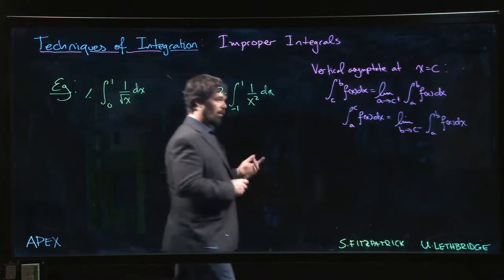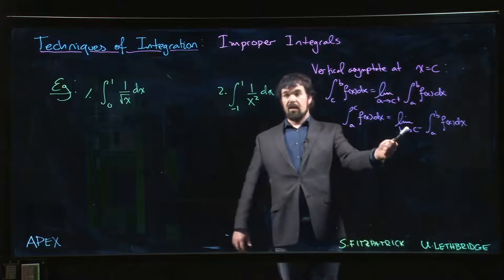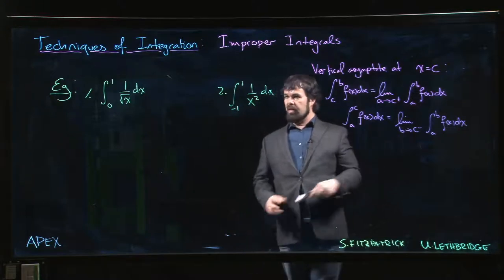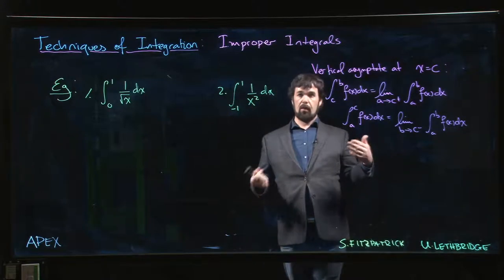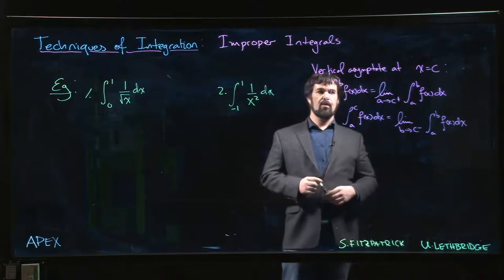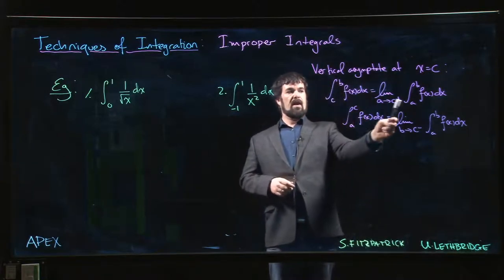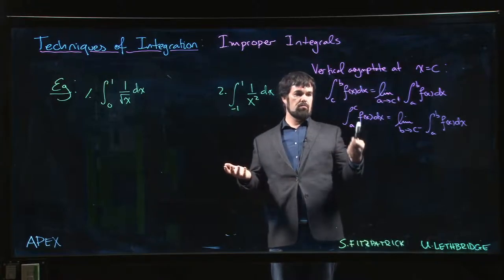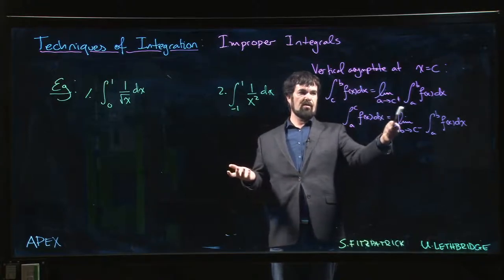It's exactly the same story if you're trying to integrate and there's a vertical asymptote that you encounter somewhere on your region of integration. So if there's a vertical asymptote at one of your limits of integration, then what you do is again you rewrite things as a limit and you check to see if that limit exists.